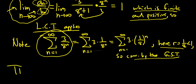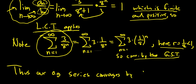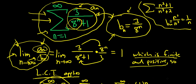Thus our original series converges by the LCT. The limit comparison test is really easy to use in the sense that you don't have to create an inequality. So if you ever have to use the direct comparison test and you don't want to, you can use the limit comparison test instead.